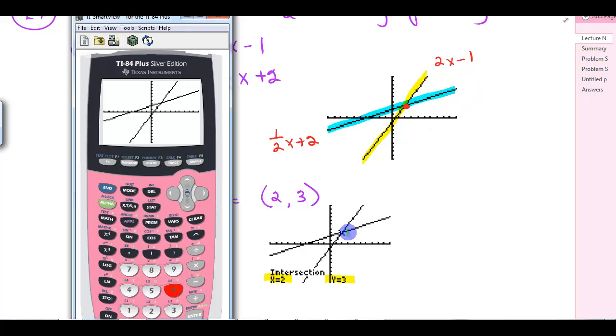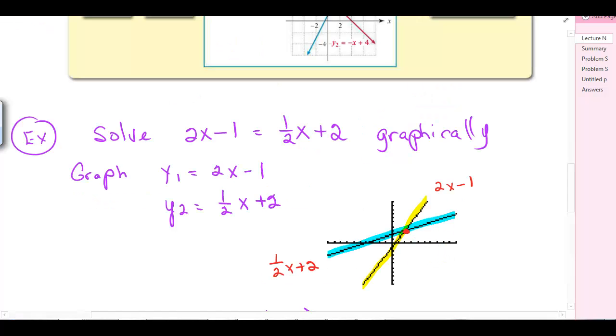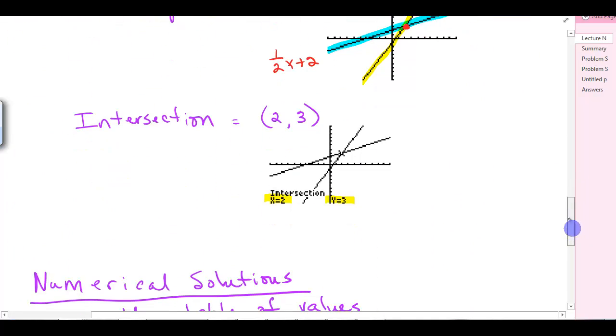We're supposed to find where these intersect. You can do second calc number 5, and hit enter 3 times. It tells me the intersection is 2, 3. So the solution is the x coordinate. If our intersection point is 2, 3, the solution would be x equals 2. That would solve that equation.